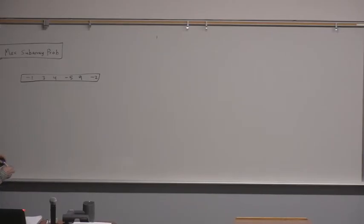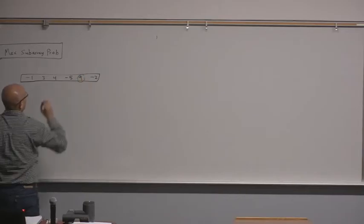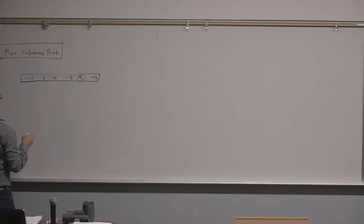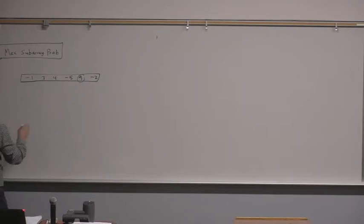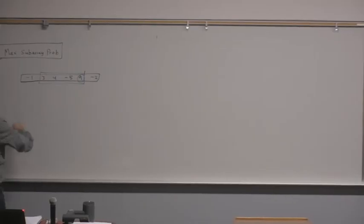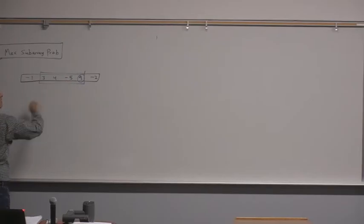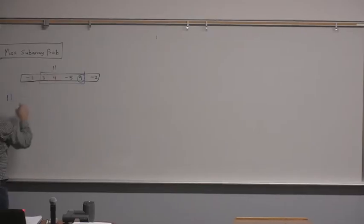So in this case, by inspection, what's the subarray that has the maximum sum? What about 3 plus 4 minus 5 plus 9? So in this case, this is the maximum subarray: 3, 4 — that's 7, minus 5 is 2, plus 9 is 11. Can you find a subarray with a sum greater than 11?